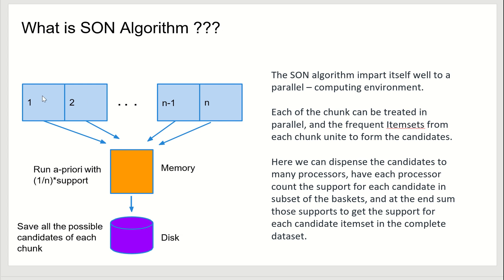As shown in the diagram, all the baskets are merged into memory by running an appropriate algorithm with 1/n support, and then all the possible candidates of each chunk are moved to disk. The SON algorithm lends itself very well to a parallel computing network, where each chunk can be treated in parallel and frequent item sets from each chunk unite to form the candidates.